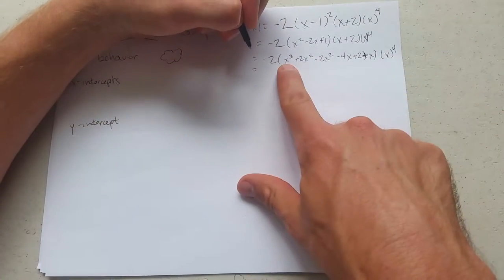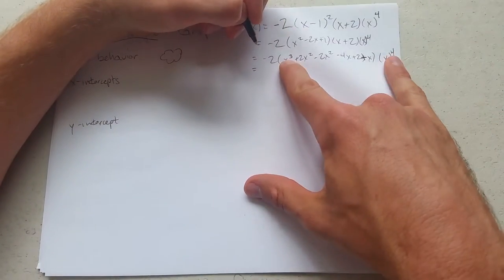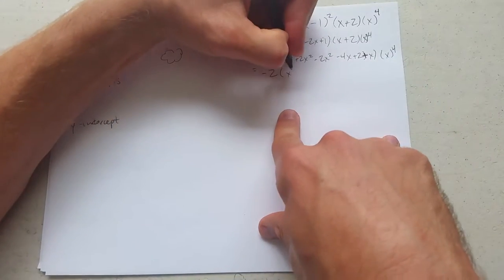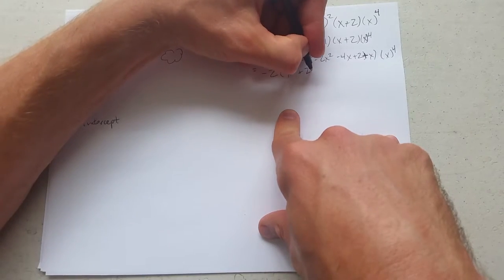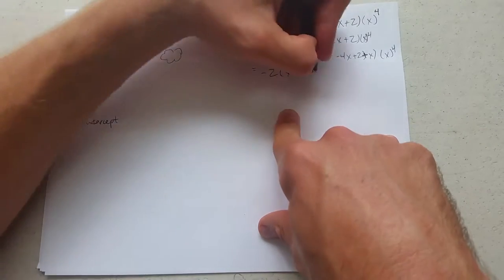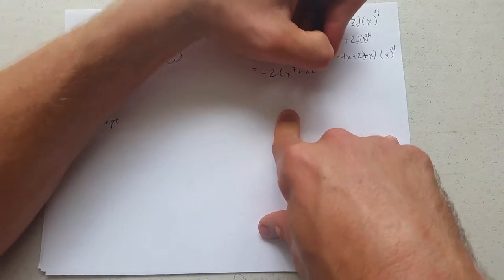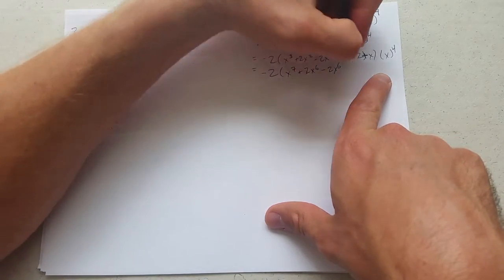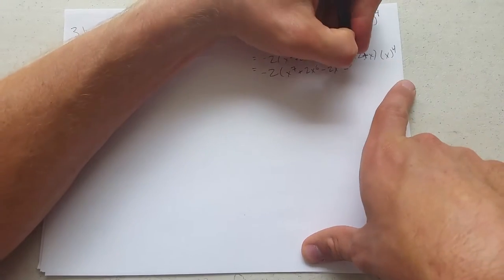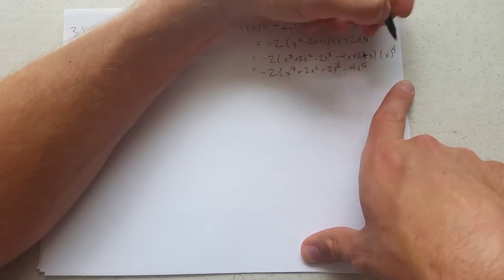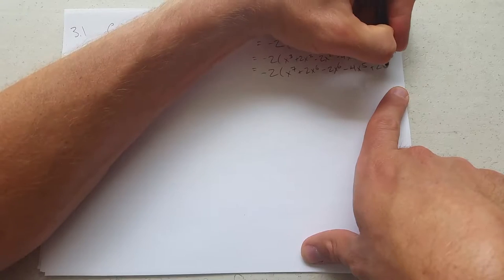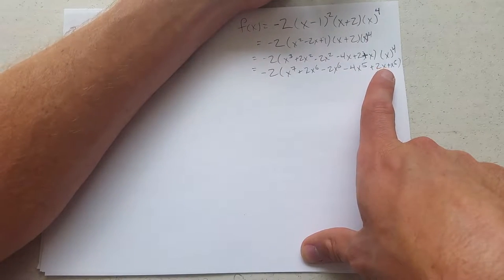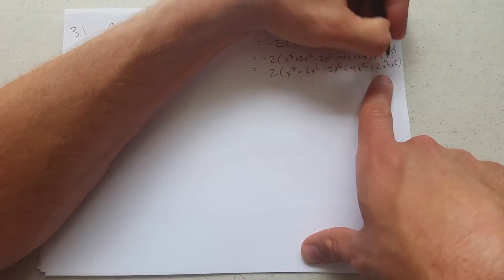Now, when I multiply this in here, I'm adding exponents. So we have x cubed times x to the 4th, x to the 7th, plus 2x to the 6th, minus 2x to the 6th, minus 4x to the 5th, plus 2x, plus x to the 5th. 2x to the 5th.